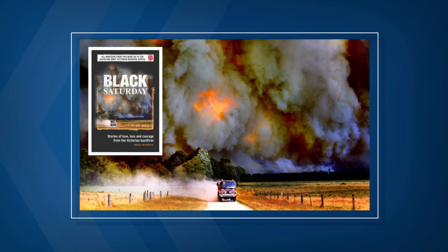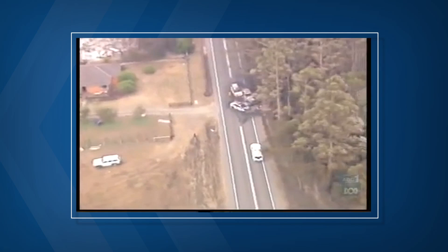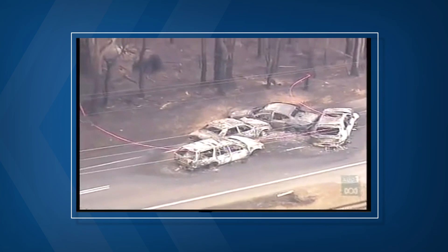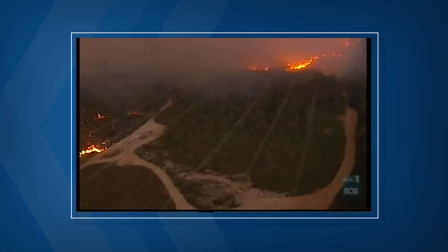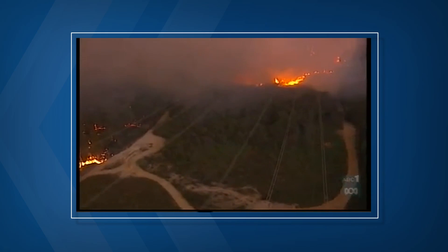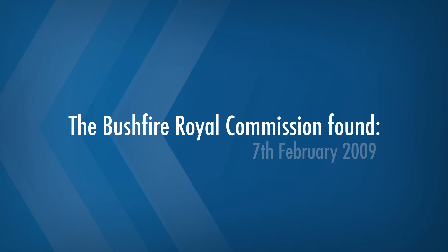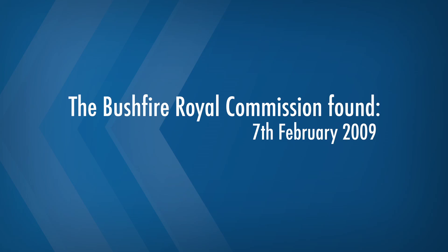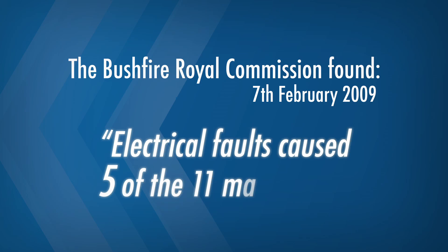None more destructive than the 2009 Black Saturday fires in Victoria. Many of the people who died on Black Saturday perished while trying to defend their homes. There was a claim that power lines also played a major part. 70% of the deaths approximately that occurred here occurred from electricity asset failures. The Bushfire Royal Commission found that on the 7th of February 2009, electrical faults caused five of the 11 major fires.